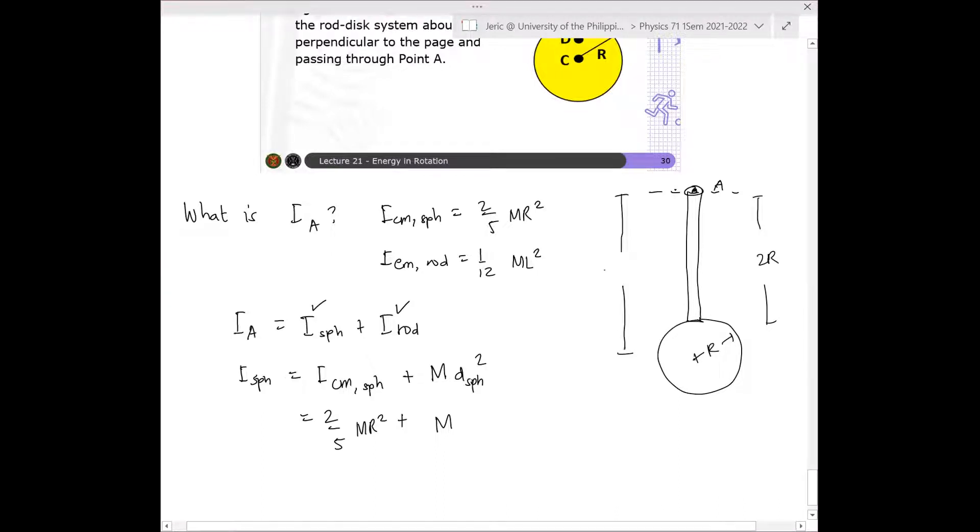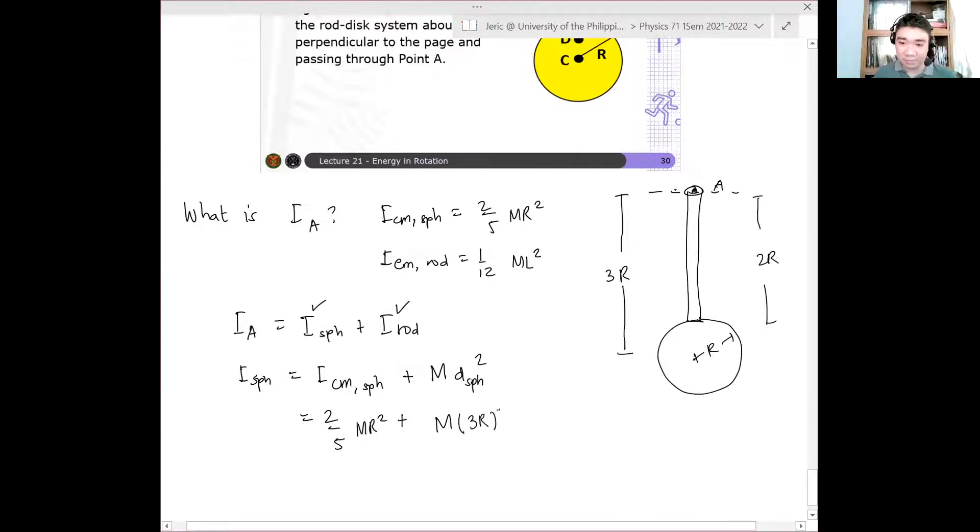3R. This is 3R, right? So this is 3R. So this is M times 3R quantity squared. And what comes out is I. So this means that I sphere is 47/5 MR².